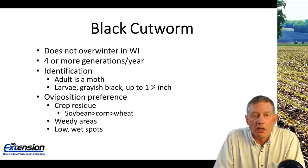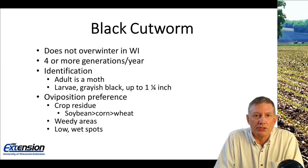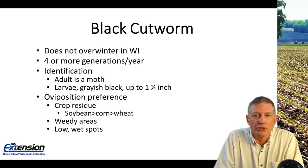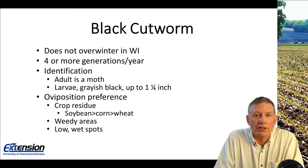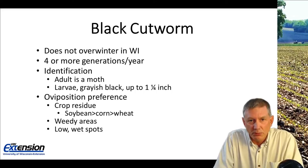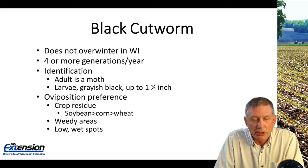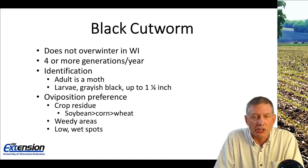Black cutworms, a lot like armyworms, do not overwinter in Wisconsin. There are four more generations per year, but it's only that first or second generation that can cause a problem on seedling corn. The adult is a moth, and for the most part, unless we're running blacklight traps, we're not concerned with what the adults look like.